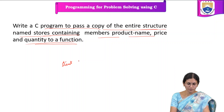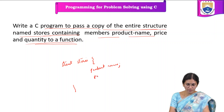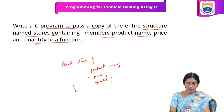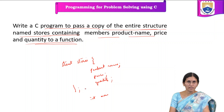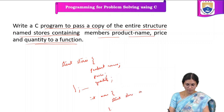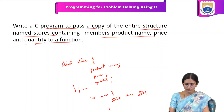The structure name is stores — struct stores. Inside this, it has members like product name, price, and quantity. Inside the main function, we can declare the variable here itself, or we can declare it as we do for any other variable. So, struct stores — suppose we declare a variable of type A. We need to write a user-defined function where we are passing a copy of the entire structure.